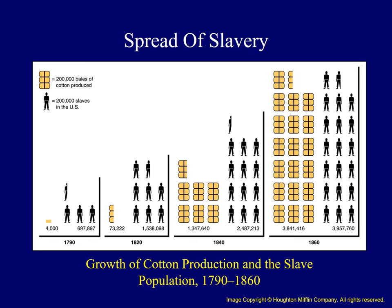One final figure reinforces the concept that cotton production and slavery grew together in the Old South. In 1790, there were just fewer than 700,000 slaves living in the United States, and cotton production was limited. However, over the years, more cotton was produced, and the number of slaves reached nearly 4 million by 1860.